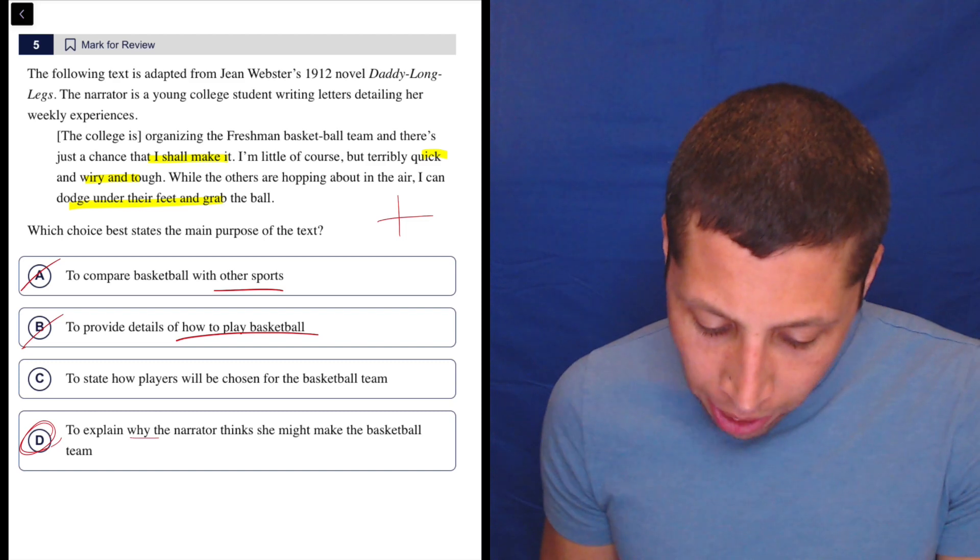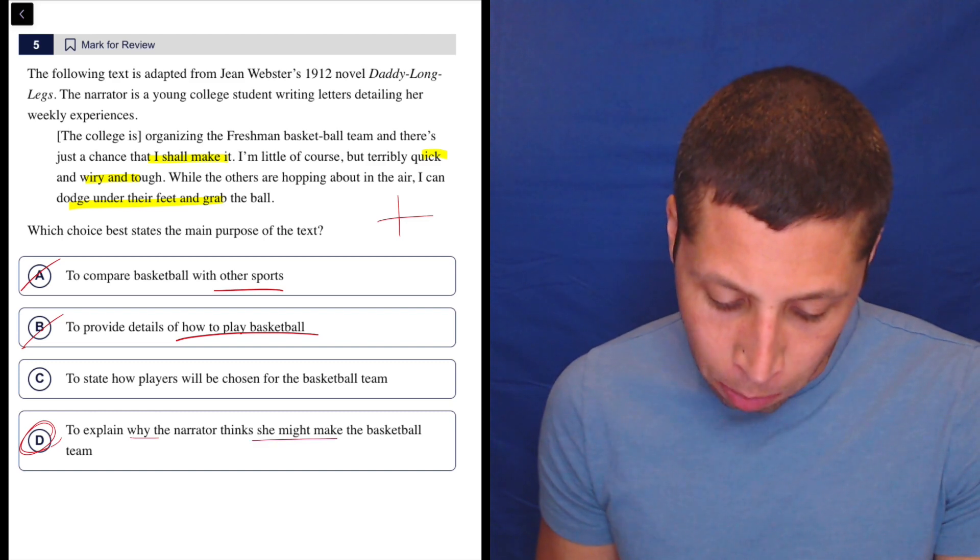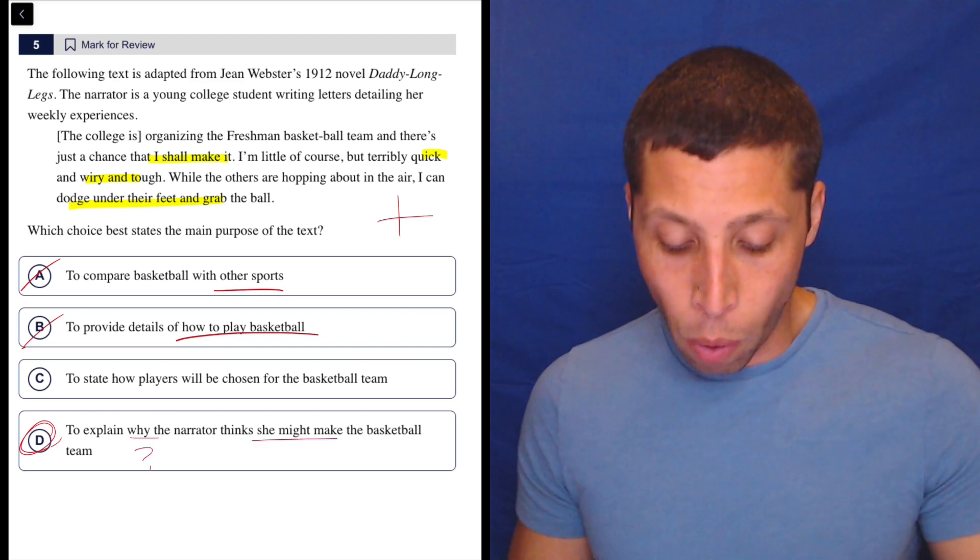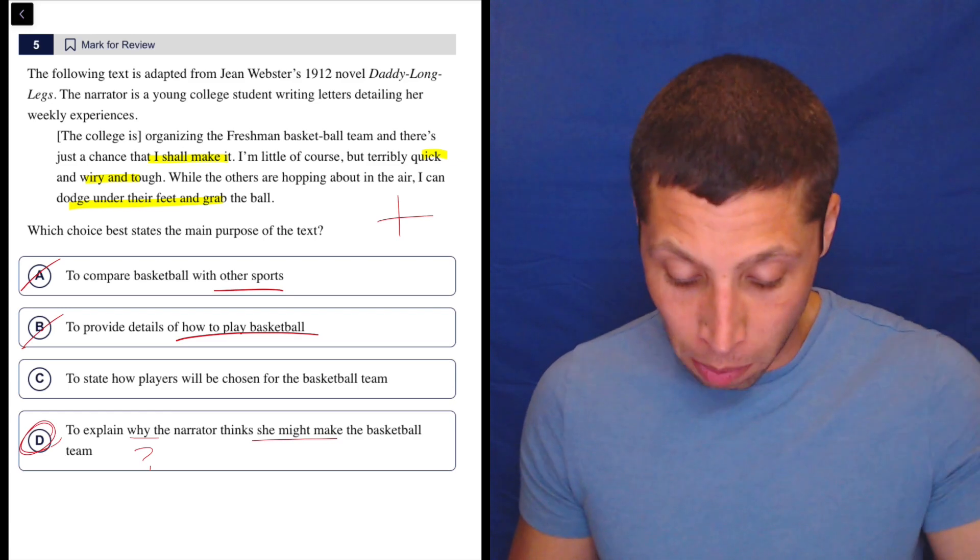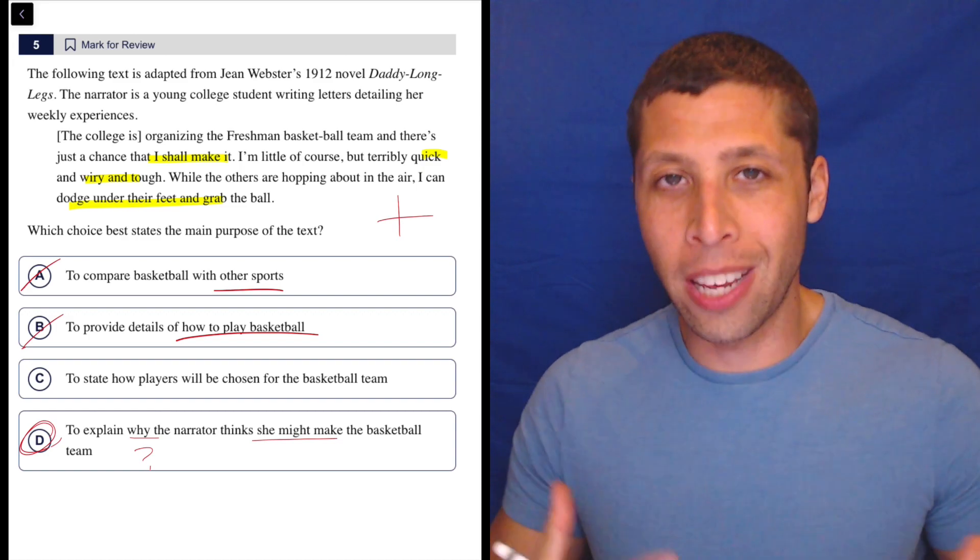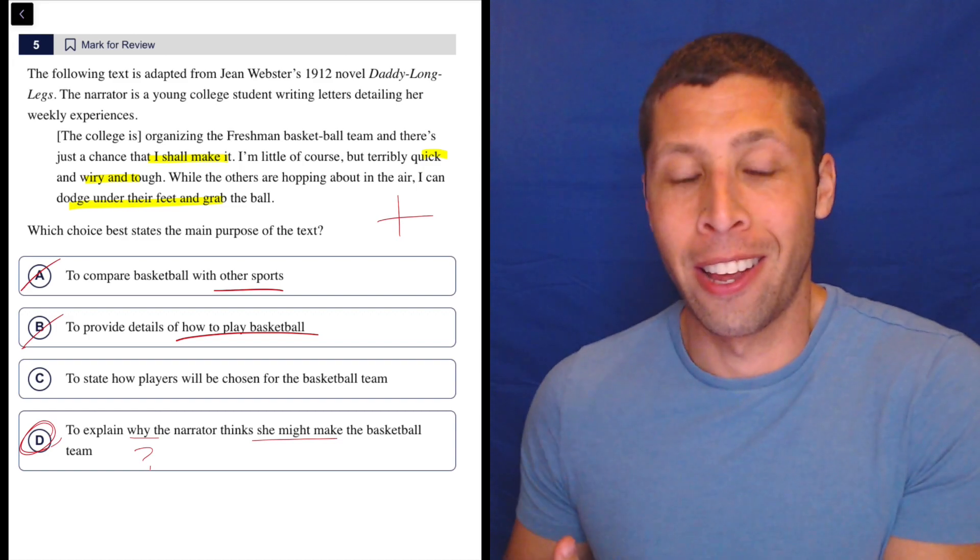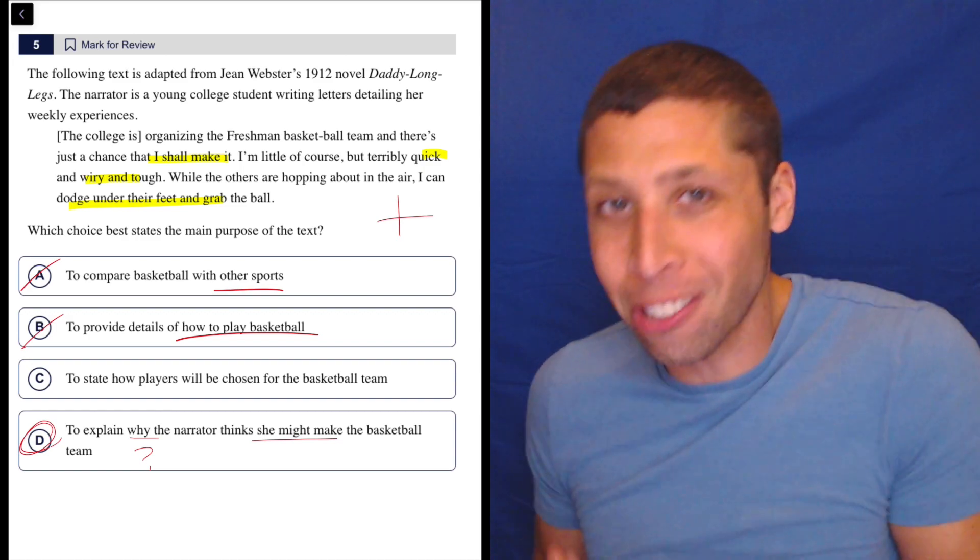Well, let's turn that into a question. Why would the narrator think she might make the baseball team, right? So what's the reason? Well, she's wiry and tough and quick. She can dodge under people's feet and grab the ball, right? Notice how when you turn the answer into the question it becomes easy to answer that question. That's you finding evidence for that answer choice.